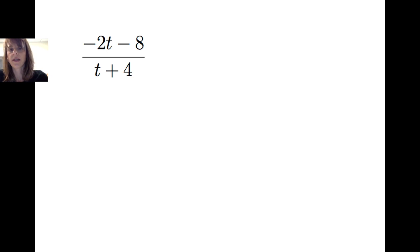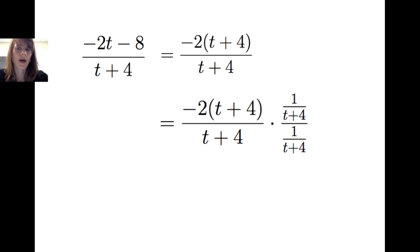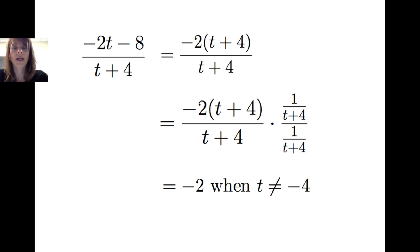We can also consider an analytical approach to evaluating a limit. For negative 2t minus 8 divided by t plus 4, I can factor negative 2 from the numerator, giving negative 2 times t plus 4, divided by t plus 4. Multiplying by a form of 1 — specifically 1 over t plus 4, divided by 1 over t plus 4 — we can cancel common factors and get negative 2, as long as t is not equal to negative 4.